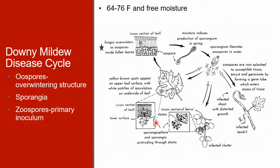Berries are most susceptible to infections up until about pea size, but all parts of the fruit cluster remain susceptible until maturity. During warm and dry weather, P. viticola produces oospores in the leaf tissue and the cycle begins again. These oospores can remain dormant for several years in leaf debris on the ground. In warmer regions, such as the southeastern U.S., oospores and mycelia in infected leaves can initiate spring infections.